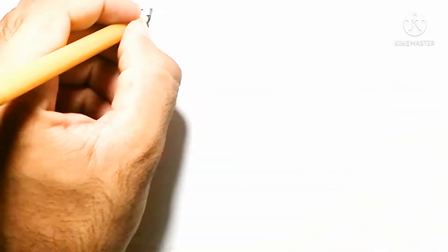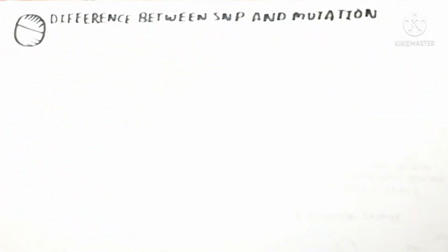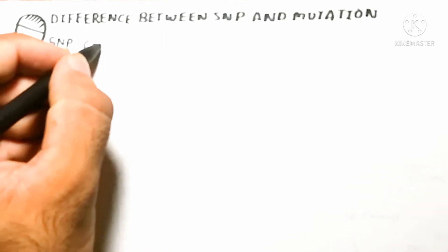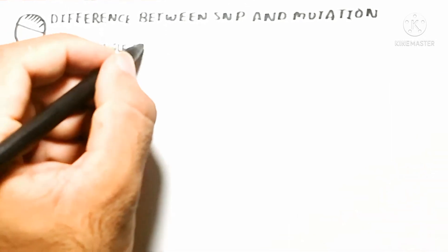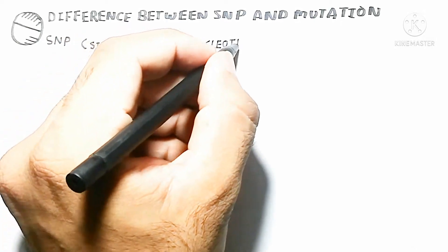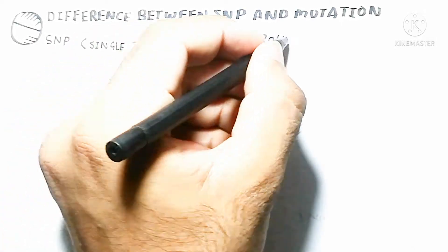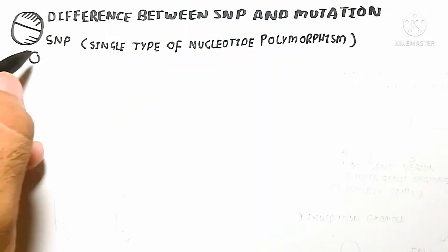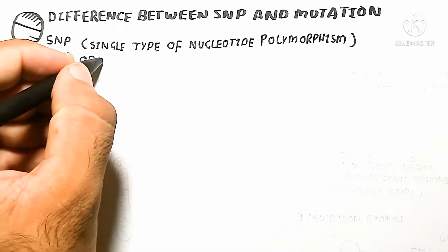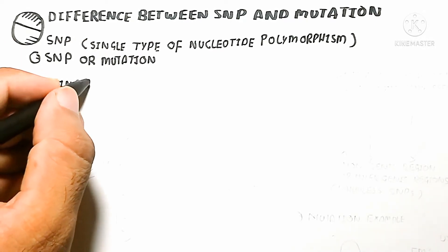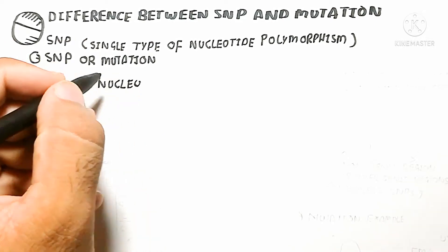Hello, in this video we will discuss the difference between SNP and mutation — what is SNP, what is mutation, and what is the difference between both terms. Let's begin to understand SNP first. SNP stands for Single Nucleotide Polymorphism, meaning a single nucleotide change across a population while the whole genome remains the same.